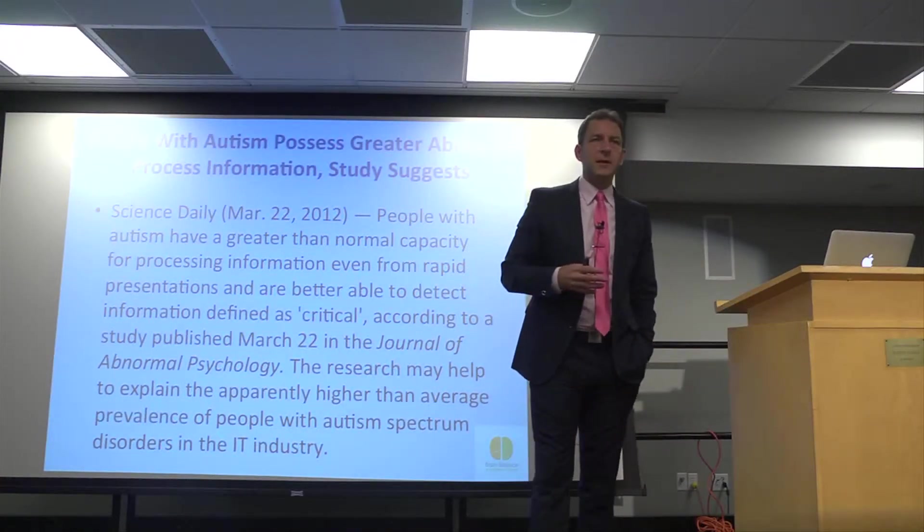The left side of the brain controls small muscles that move rapidly in a sequence, like when we're typing — fine motor skills. The left side of the brain controls that.